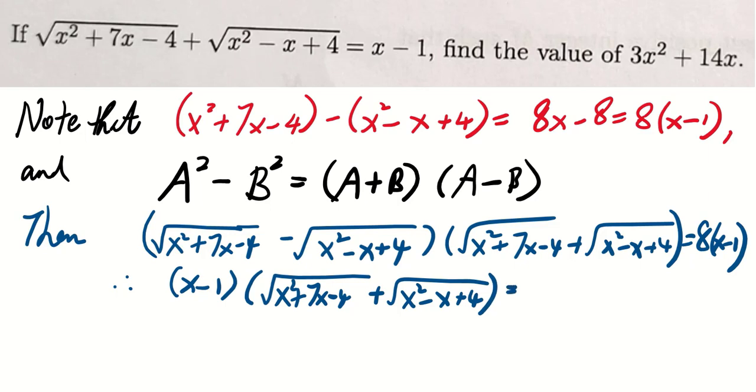And therefore, x minus 1 times square root of x squared plus 7x minus 4 plus square root of x squared minus x plus 4 equals to 8 times x minus 1. Therefore, square root of x squared plus 7x minus 4 plus square root of x squared minus x plus 4 equals to 8.